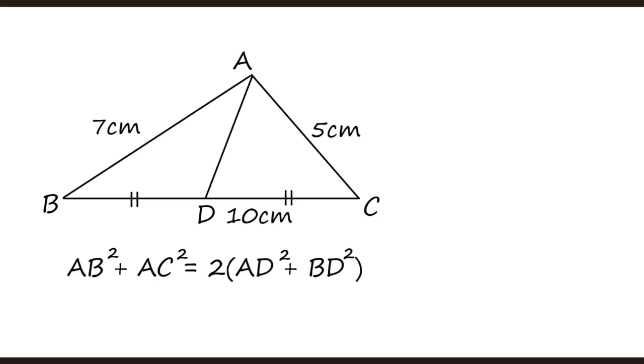Now let us go back to Apollonius theorem. If there is a median, then the adjacent sides AB and AC, the sum of their squares will be equal to 2 times the square of the median and the half the other side. So median square AD square plus half the other side which is 5, so 25. AD square plus 25 whole thing multiplied by 2 should be equal to 7 square plus 5 square. Once we solve it, we get AD equal to 3.5 cm.